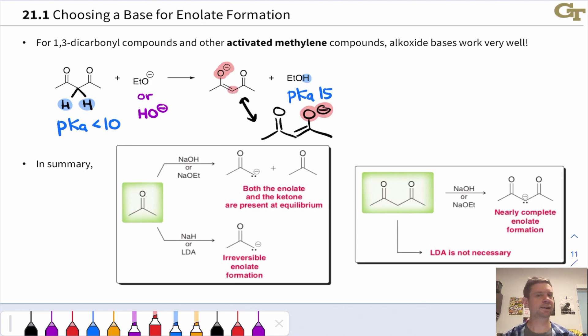So these stabilized enolates can readily be deprotonated by alkoxide bases, and this tends to be true almost regardless of what the other withdrawing group is. Because if this is a cyano, a sulfonyl, a nitro, all of these can be deprotonated completely by alkoxide bases.